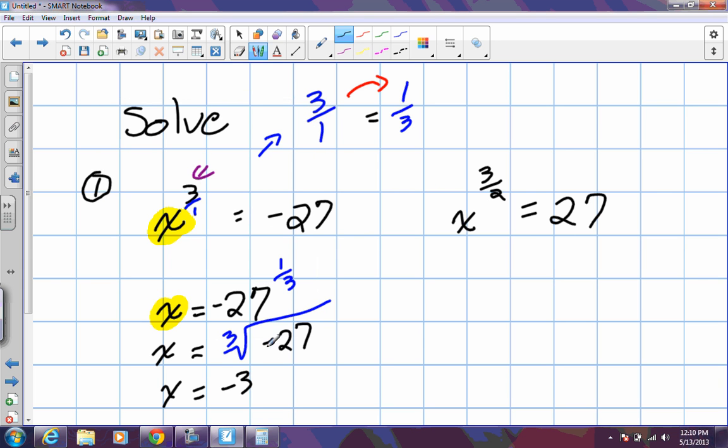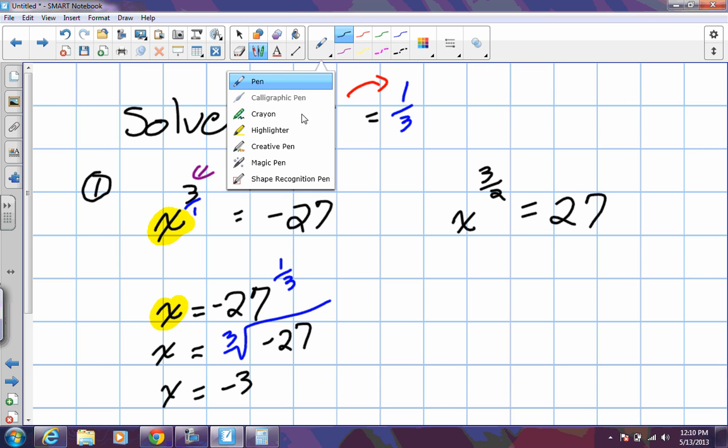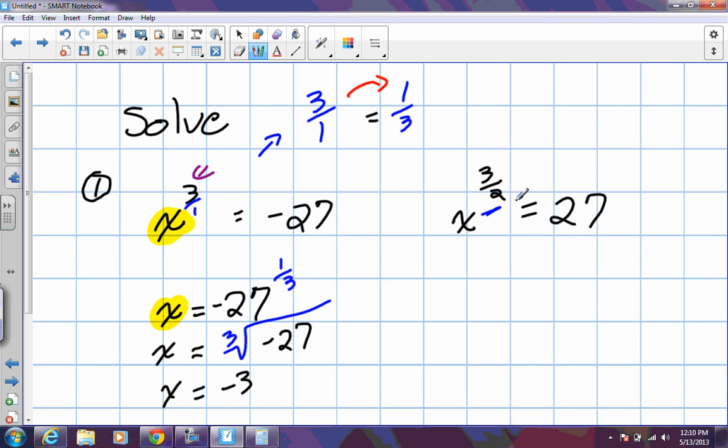So let's try another example. In this example here, we have 3 over 2. We need to isolate for X. So when we move that exponent to the other side, we need to invert that fraction. Right? So when it goes to the other side, we're going to have X is equal to 27. What will the fraction read? That's right, 2 over 3.